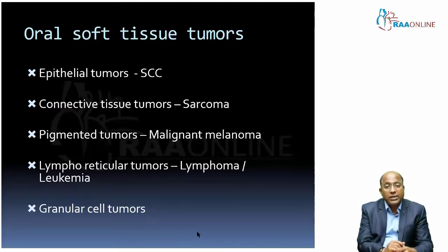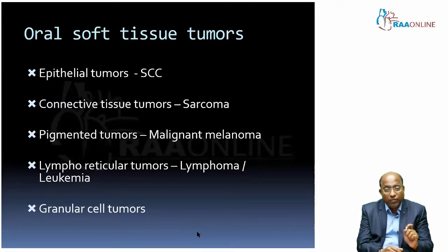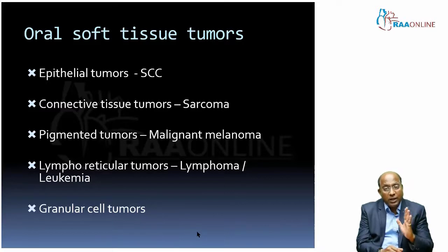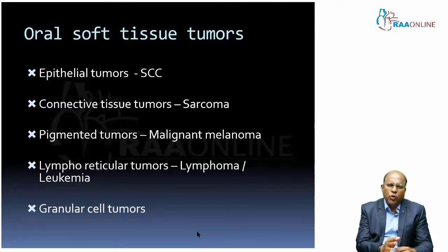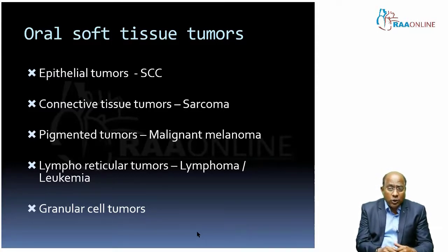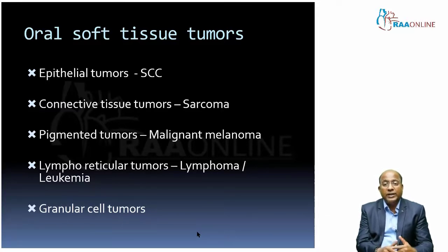Whenever a tumor has an epithelial origin, you call it a carcinoma. Any malignant tumor arising from epithelial origin is known as a carcinoma. In oral carcinoma, unless proven otherwise, squamous cell carcinoma is most common. When they talk about oral cancer, they almost exclusively say it is squamous cell carcinoma — not that other types cannot occur, but the predominant type in the oral cavity is squamous cell carcinoma.